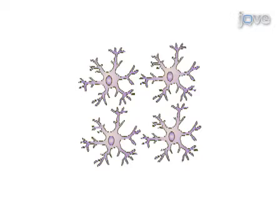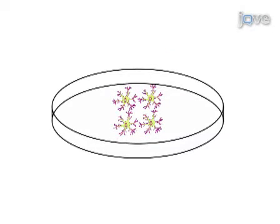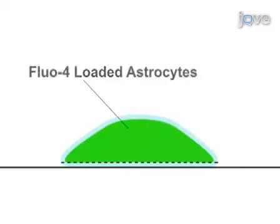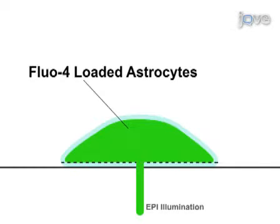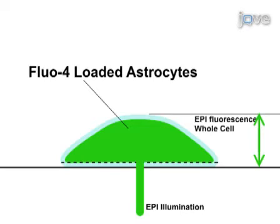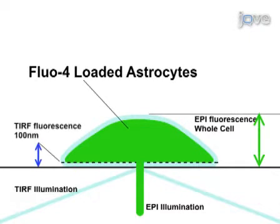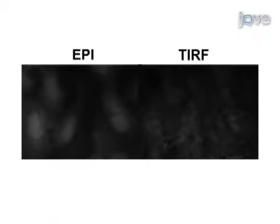The cells are then plated onto coverslips. The second section will show how to measure intracellular calcium dynamics in astrocytes, which involves loading of Fluo-4 calcium indicator dye, and measuring global calcium dynamics by epimicroscopy and near-membrane calcium dynamics by TIRF microscopy. By changing the illumination automatically and quickly, both global and near-membrane calcium can be observed almost simultaneously.